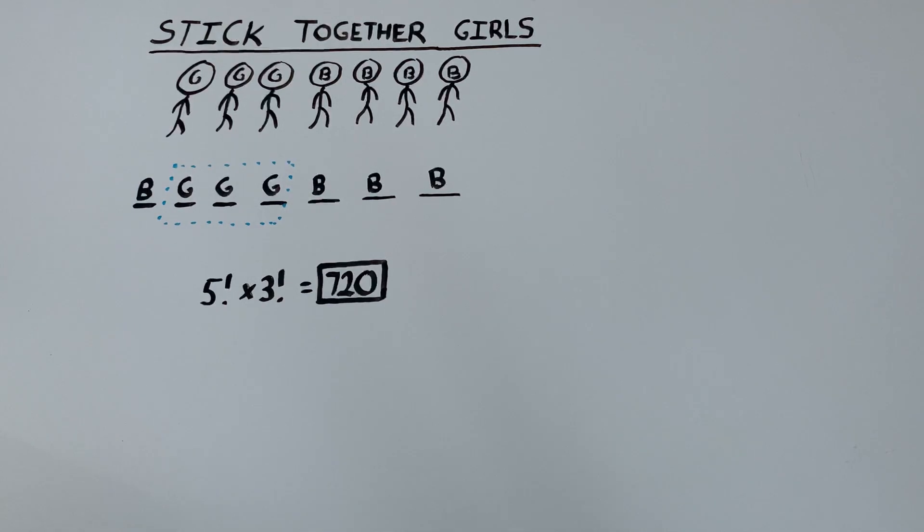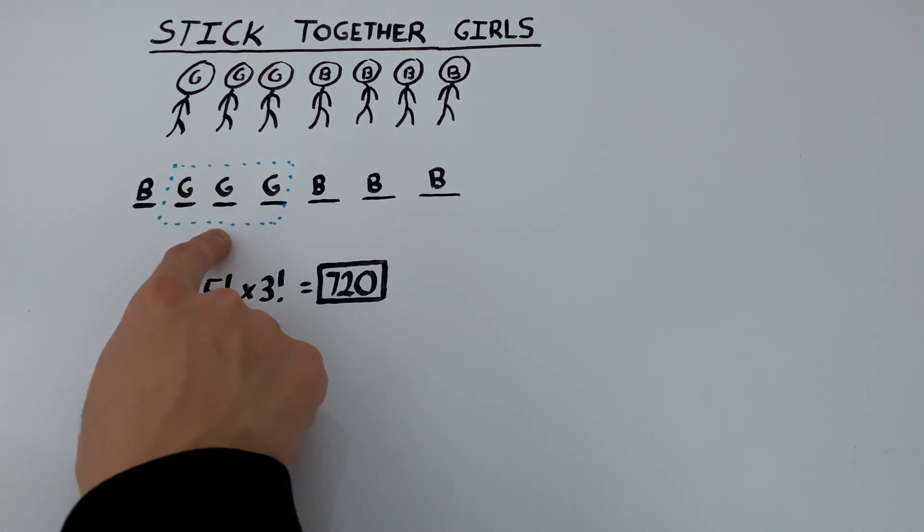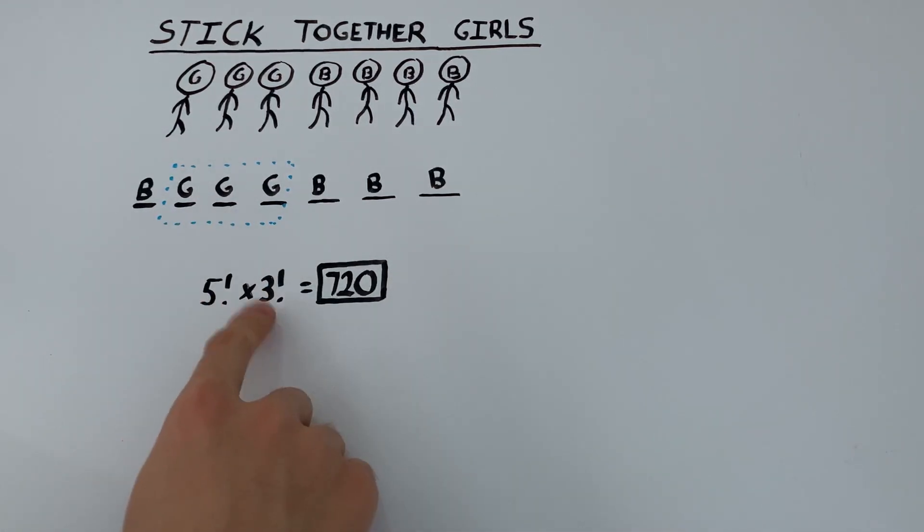Then we ask ourselves, how many ways can the five units be rearranged? Well, that's five factorial ways. But then within the block of girls, they can actually be arranged in three factorial ways.